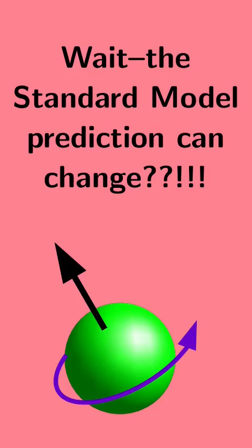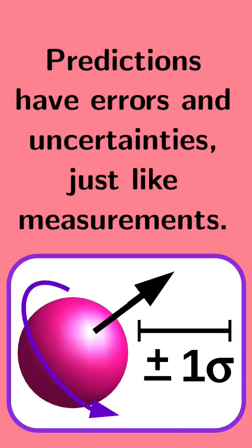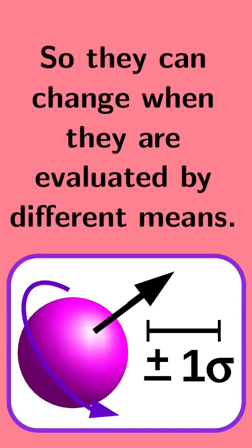Wait, the standard model prediction can change? Yep. Predictions have errors and uncertainties, just like measurements. And that means they can change when they're evaluated by different means.